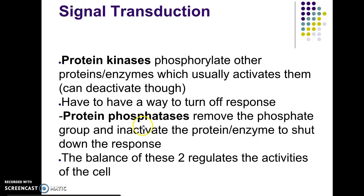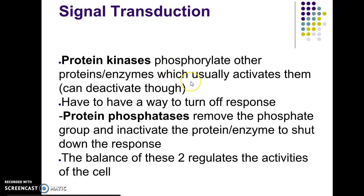In this phase, you have two different really important proteins to remember. You have a protein kinase — kinases are the ones that phosphorylate other proteins or enzymes, and this usually activates them, though it can also deactivate them depending. The kinase will usually transfer that inorganic phosphate group to a serine or a threonine amino acid. Kinases are extremely important because they regulate a very large amount of proteins in the cell.